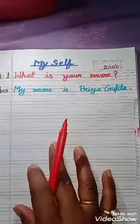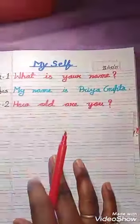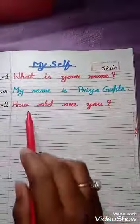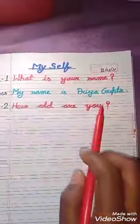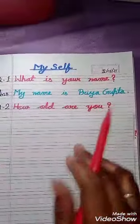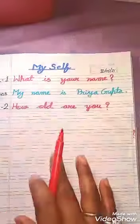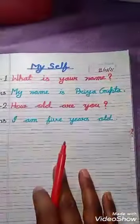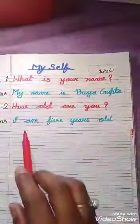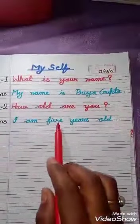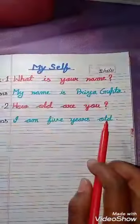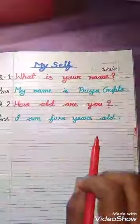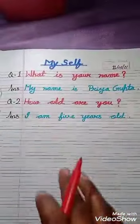Question number two: How old are you? (Tumh kitnay saal kya ho?) Answer: I am five years old. (Mena paas saal kya ho.)